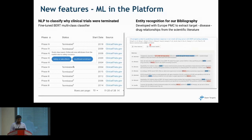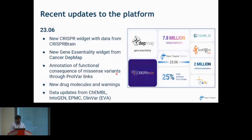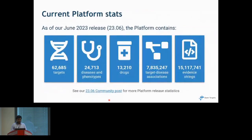As recent updates to the platform, we integrated CRISPR data from the CRISPR Brain project, added a new gene essentiality widget, and new drug molecules and warnings from the ChEMBL database. Before this release, we also integrated preprints and patents, as well as target safety evidence from AOP Wiki. As the platform currently stands, there are over 62,000 drug targets, about 24,000 diseases, 12,000 different drugs, with 7 million disease-target associations and 15 million evidence strings.